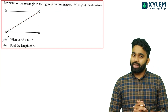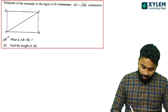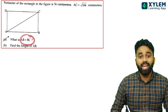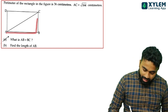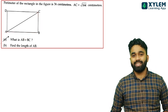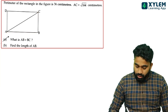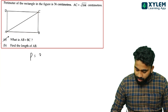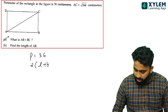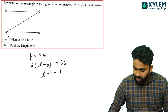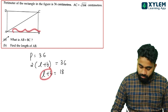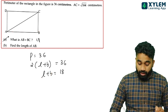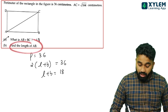We are talking about: AB plus BC, and what we will do is find the perimeter. 2 times length plus breadth — by symmetry, L plus B equals 36, and then AB plus BC equals length plus breadth, which is 18. The answer is 18.